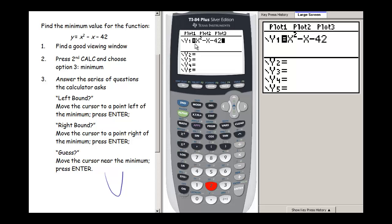The other thing I can tell from this graph is that my y-intercept, that's where my x value is 0, is going to be negative 42.